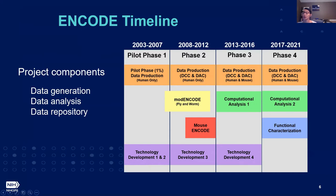Right now we're currently in the fourth phase of this program, which started in 2017, where activities in data production and computational analyses continue. We started a new component in functional characterization of ENCODE predicted candidate functional elements.